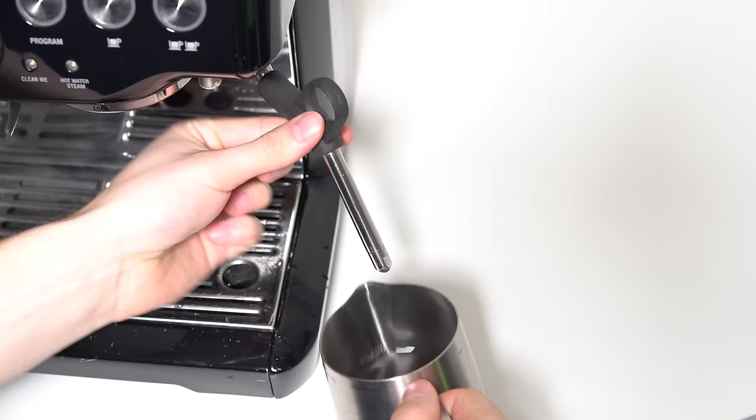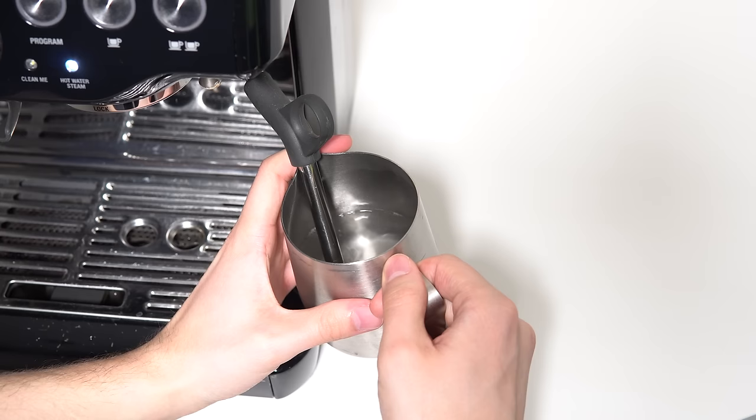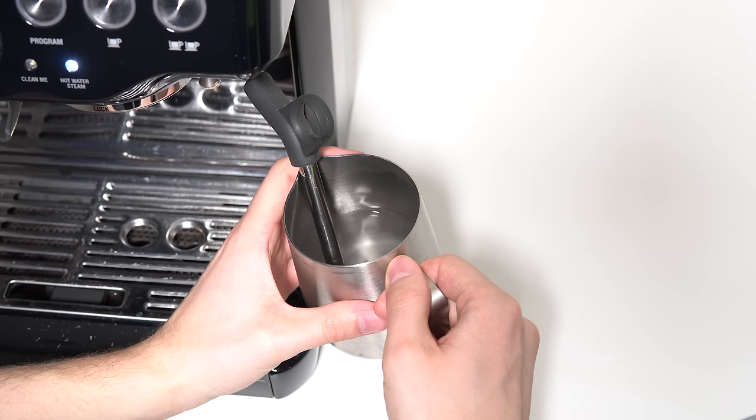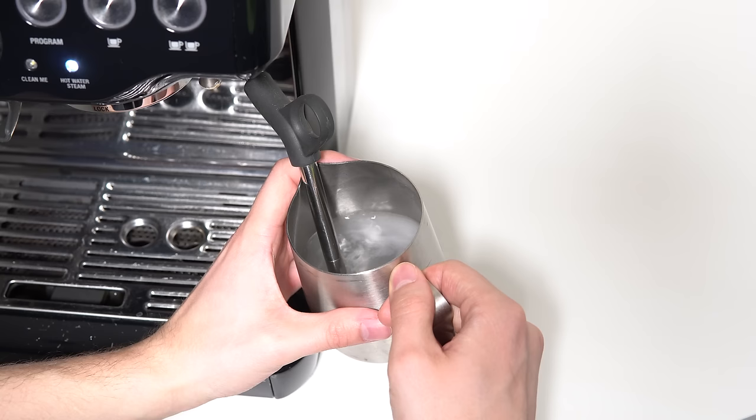Once the tip is in the pitcher and the steam is on, the first phase of the steaming process involves slowly introducing air into the milk. Right now you can see that no air is being introduced because the water is still clear. Slowly lower the pitcher until you just start to see air being introduced, and then hold that position.